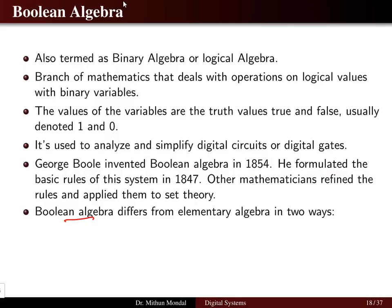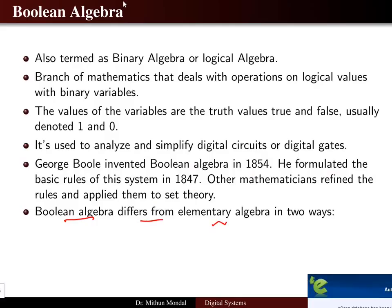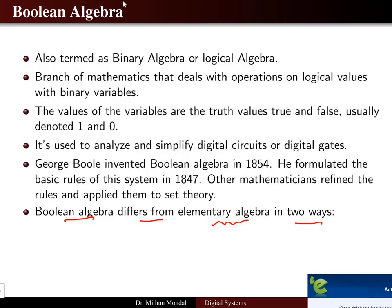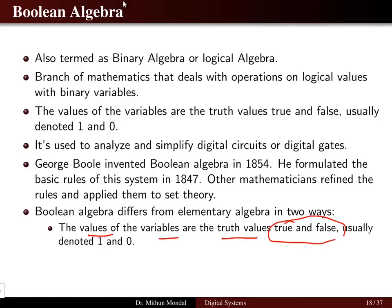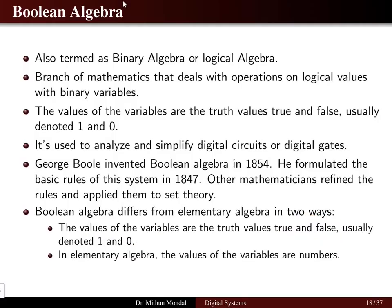Boolean algebra differs from elementary algebra in two ways. First, the values of the variables are the truth values true and false, usually denoted by zero and one — we deal only with logical values, either true or false. Second, in elementary algebra the values of the variables are numbers, where we have different other numbers to work with.